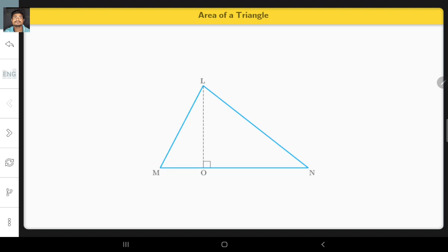For example, let LMN be a triangle with base MN and height LO. The area of triangle LMN is calculated as half into MN into LO.